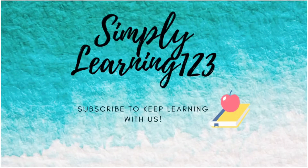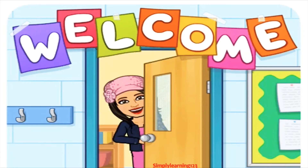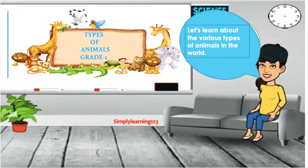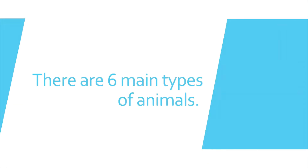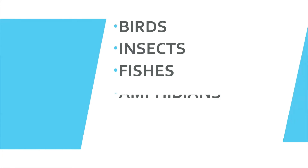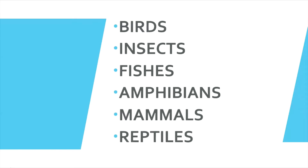Hey there and welcome to Simply Learning 123. Today's video is going to be another science lesson for grade one. We are going to learn about the types of animals. There are six main types of animals: birds, insects, fishes, amphibians, mammals, and reptiles. Let's take a look at each of these in detail.